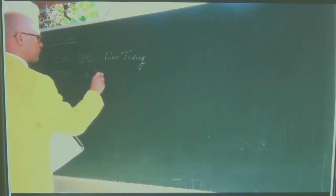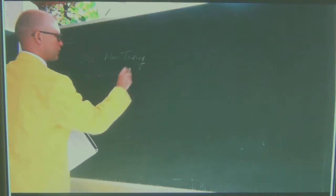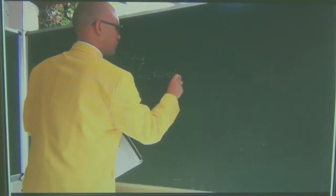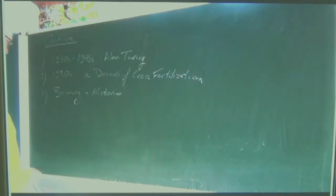In the second part I'm going to discuss the 1950s and characterize that decade as one of cross-fertilization between linguistics, computer programming and logic. We need to do that in order to understand Alan Turing's legacy better. And third I will say something about becoming a historian or thinking like a historian.